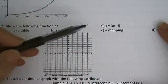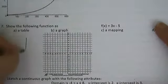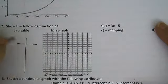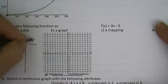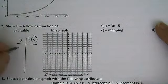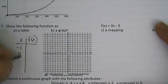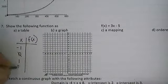f of x is equal to 3x minus 5. I'm going to choose a few different numbers for x. I will try negative 1, 0, 1, and 2.